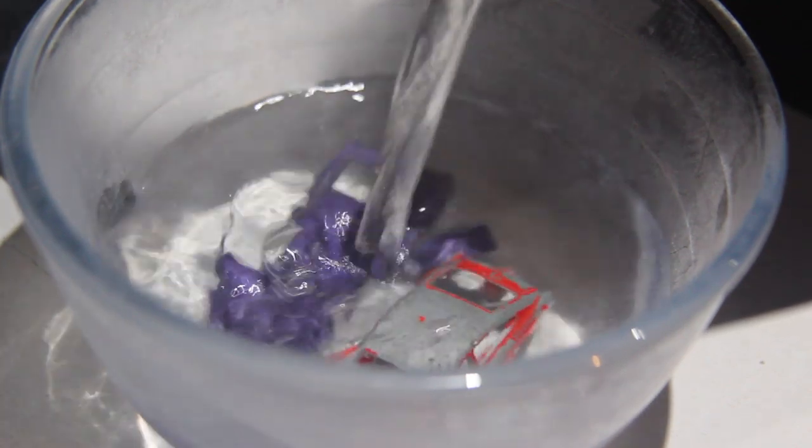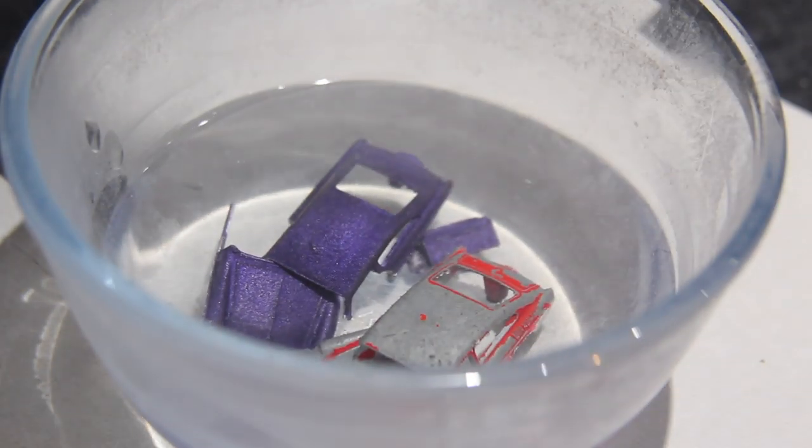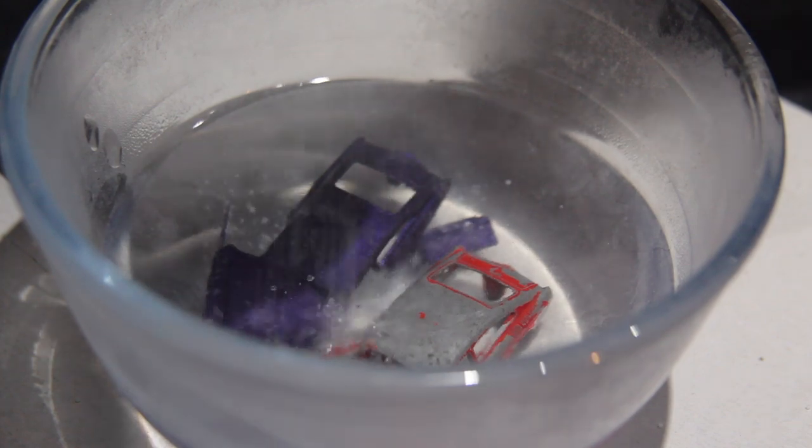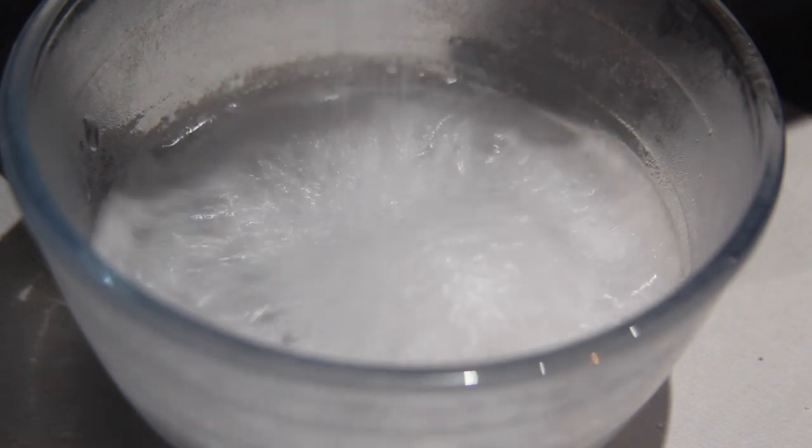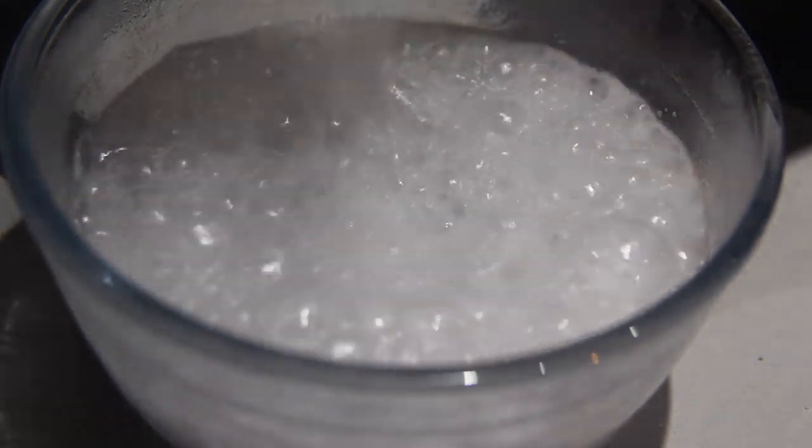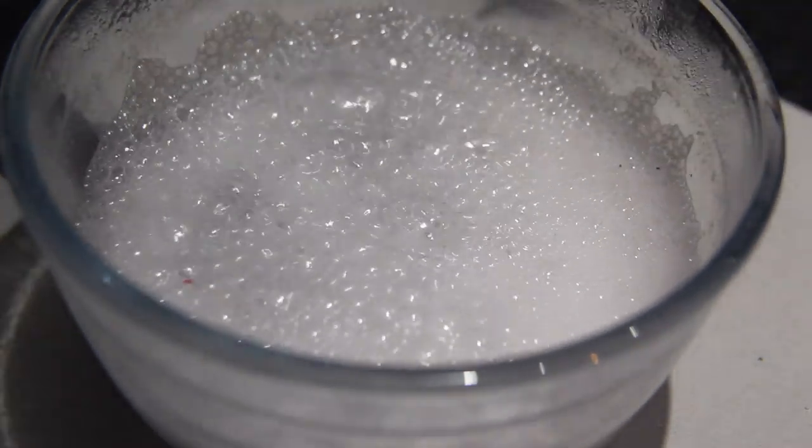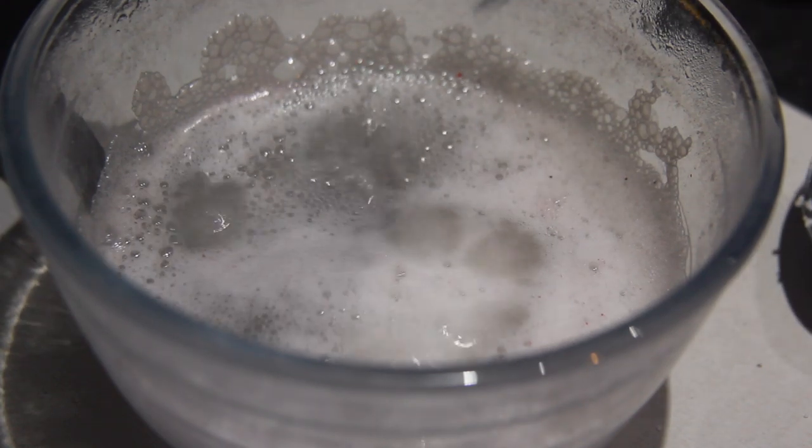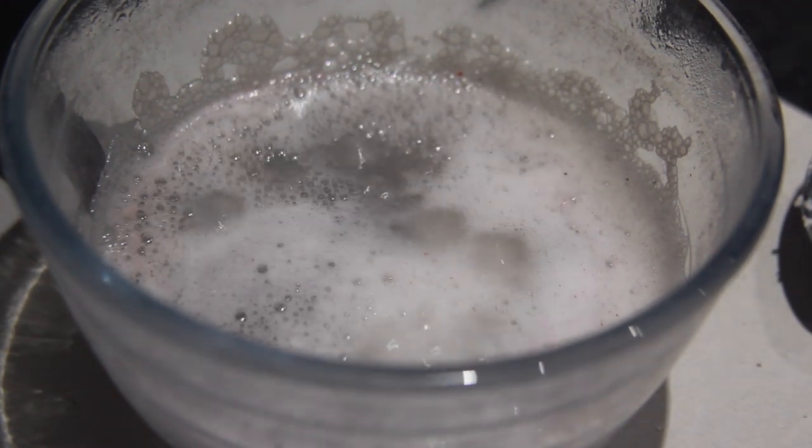In the previous scenes you can see that the models had both come apart after trying to dismantle them. Here you can see a big chunk of the purple paint come away and float to the top.